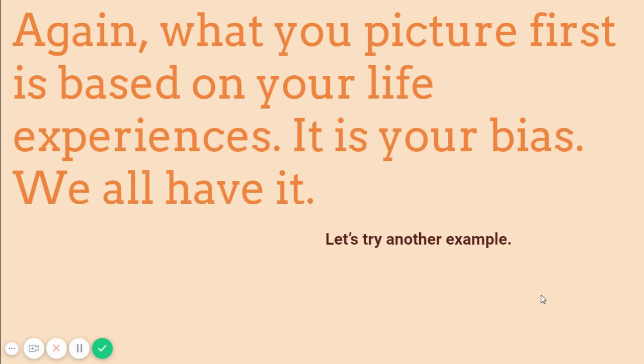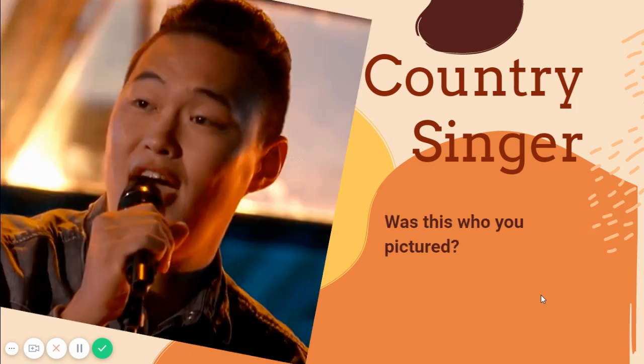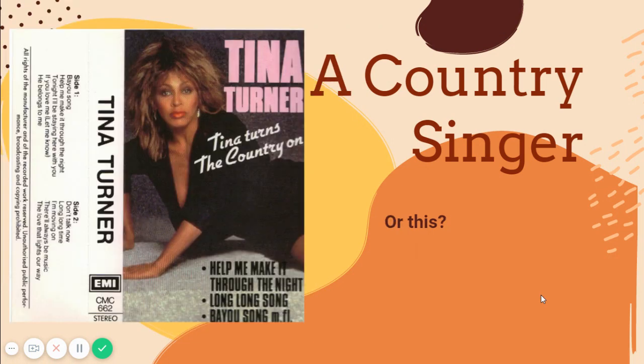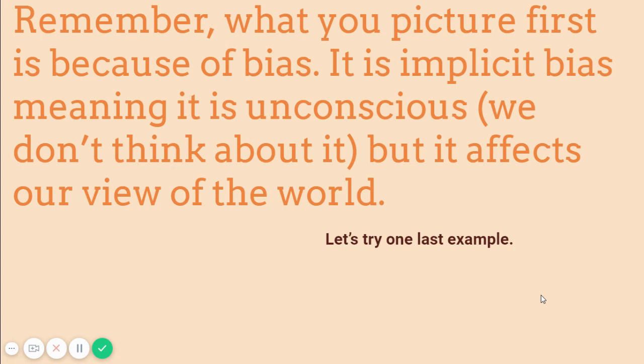We all have it. Let's try another example — a country singer. Got a picture in your head? Was this who you pictured? Or this? Or even this? What you picture first is because of bias. It is implicit bias, meaning it is unconscious. We don't think about it, but it affects our view of the world.